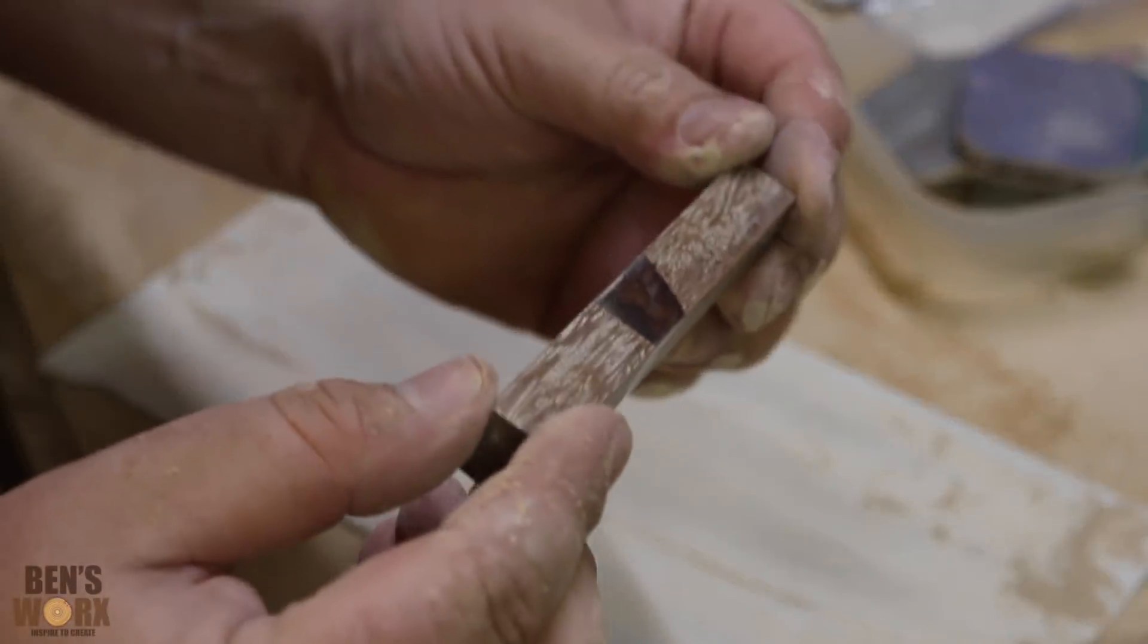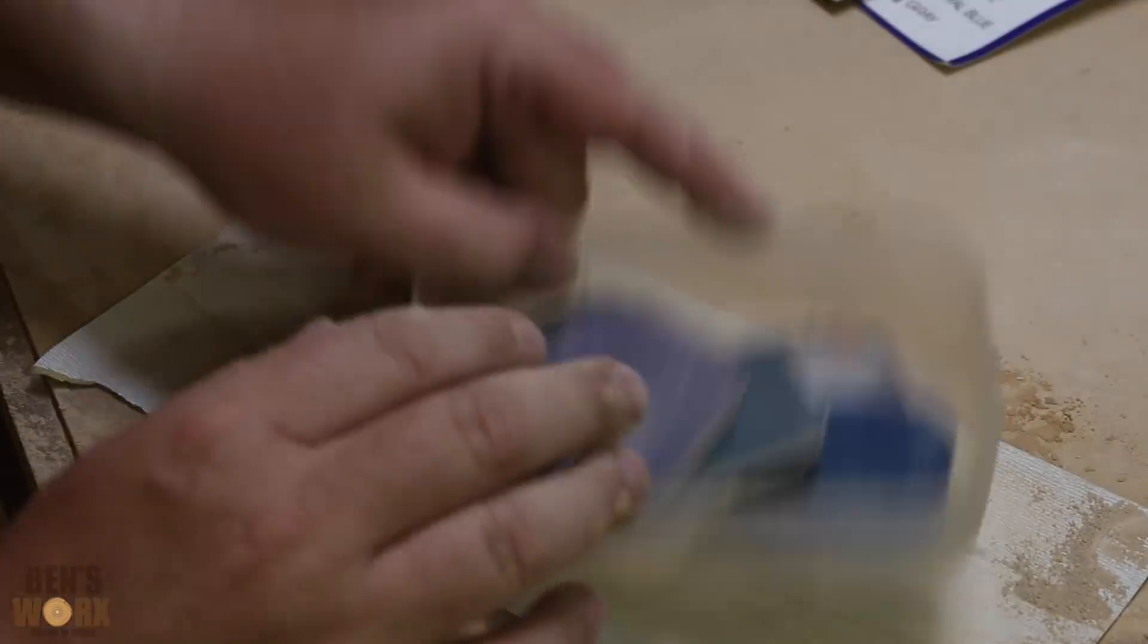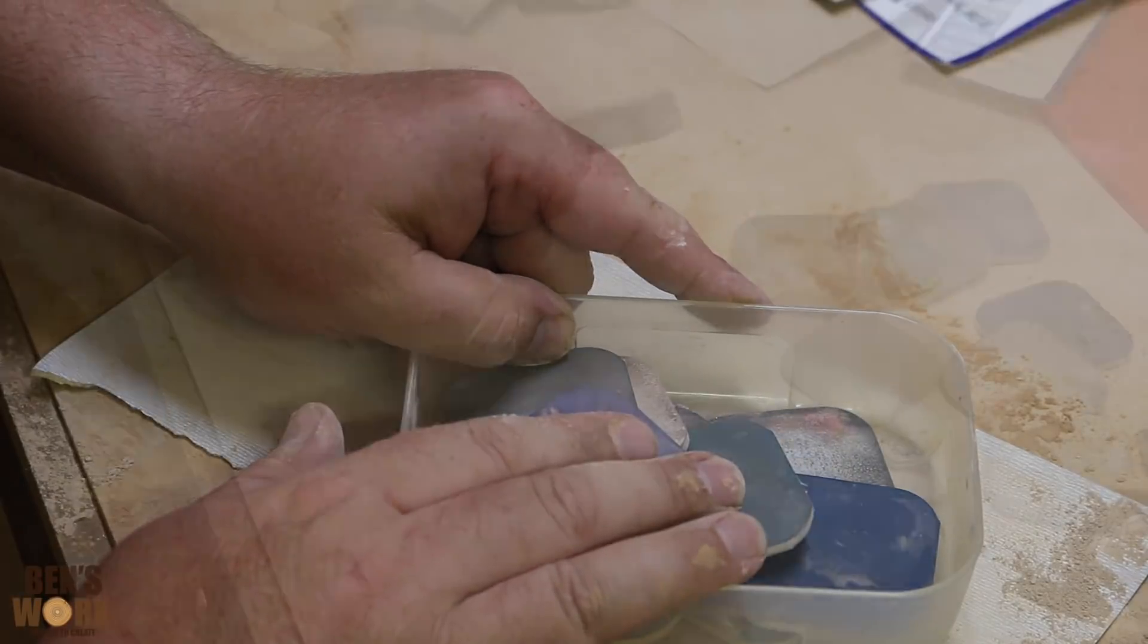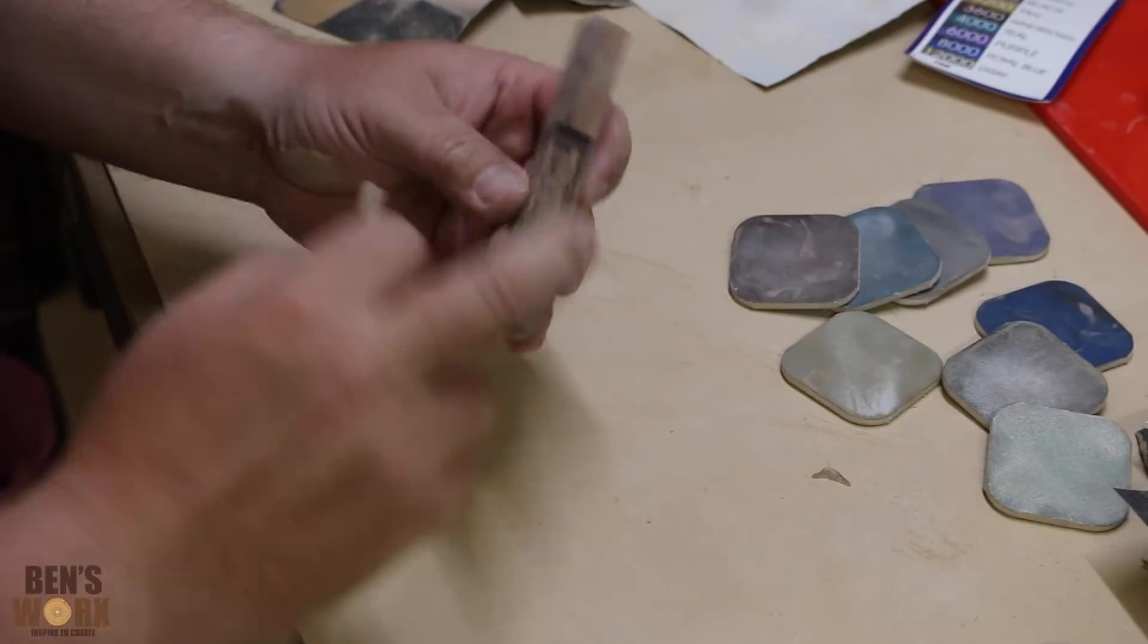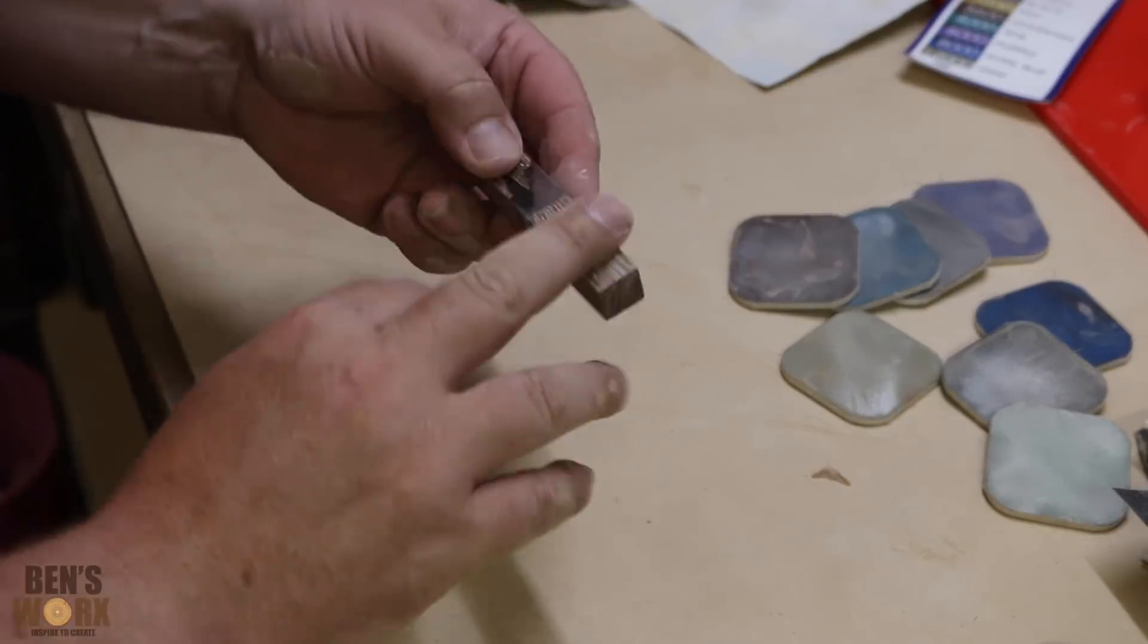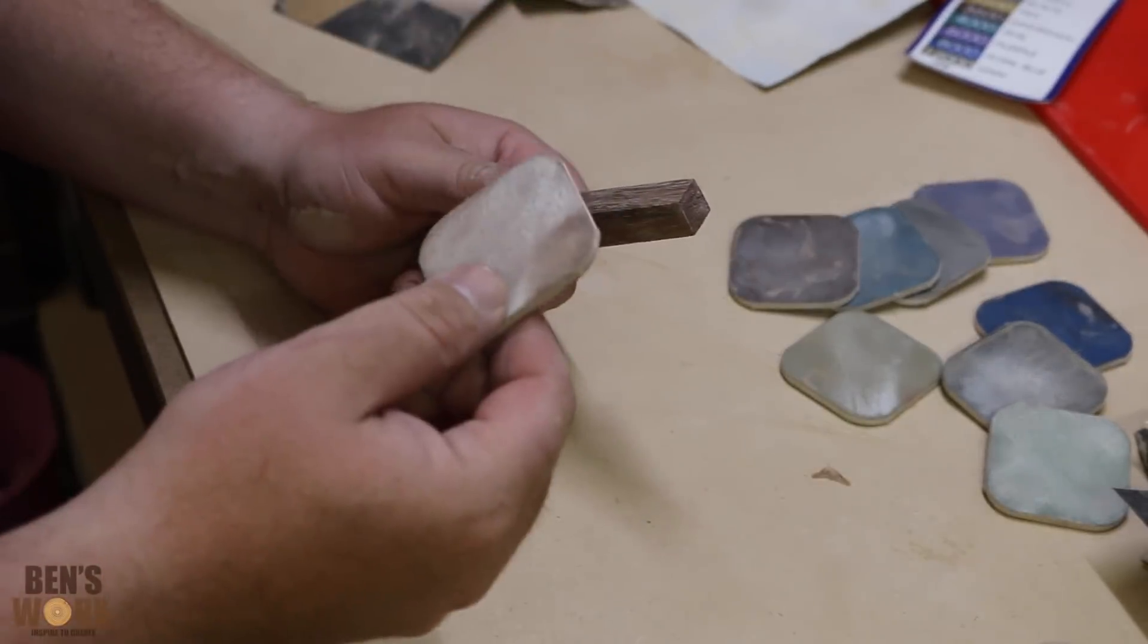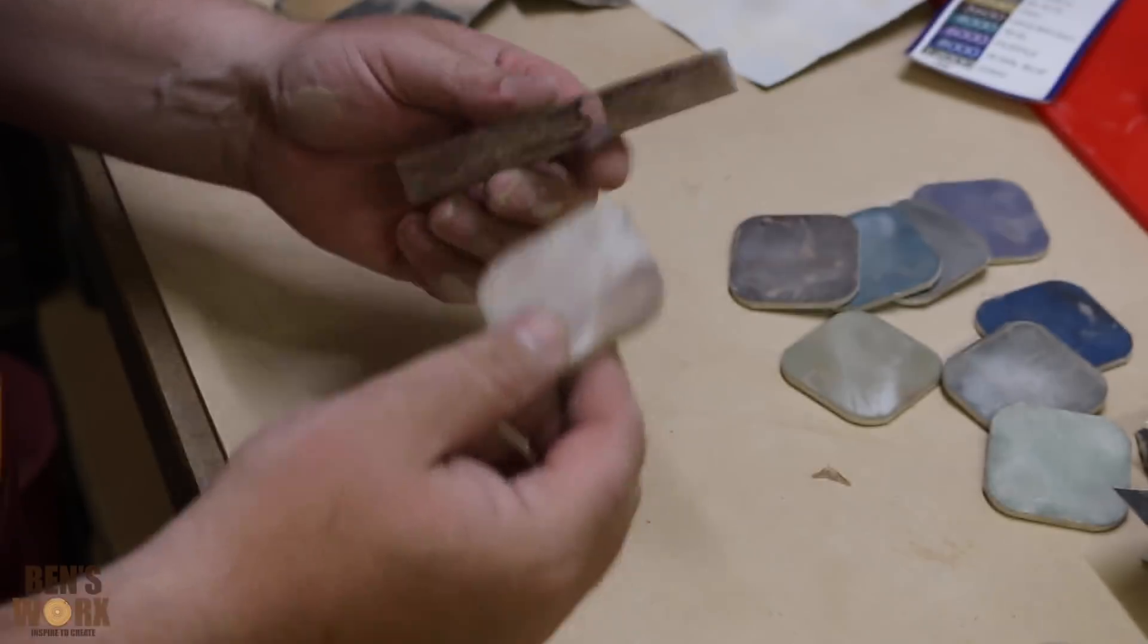Okay, so that's all the sanding finished. Now let's get on to the micro mesh. It's best when using micro mesh to use them with water, but because I've got wood involved here and I just don't want to swell the fibers up, I'm just going to go dry. It will take a bit longer but it'll work out better.